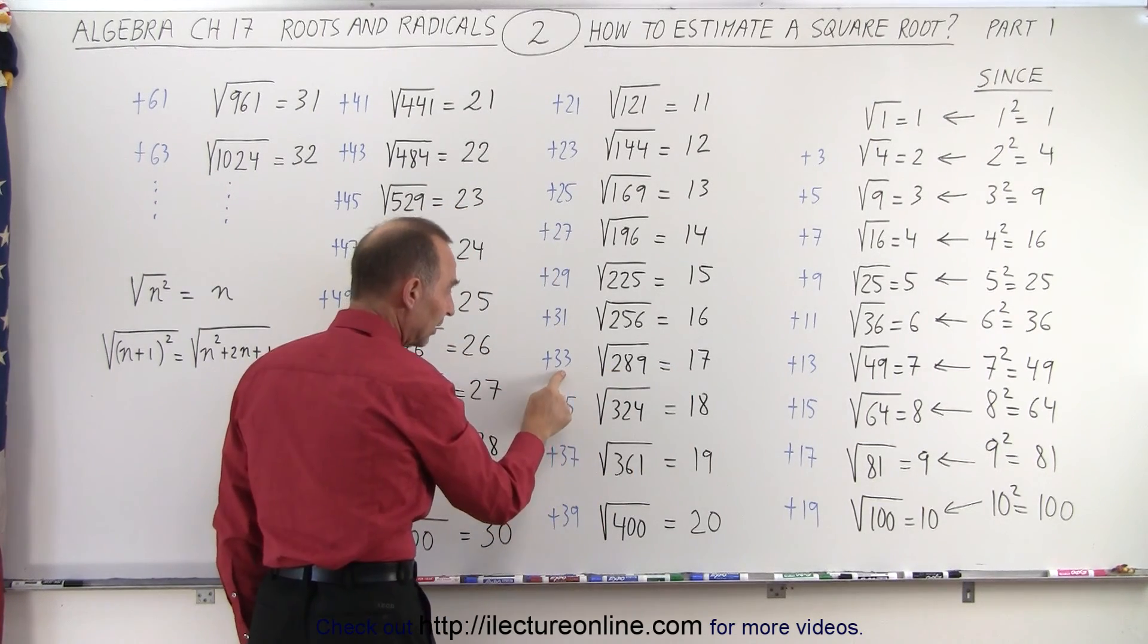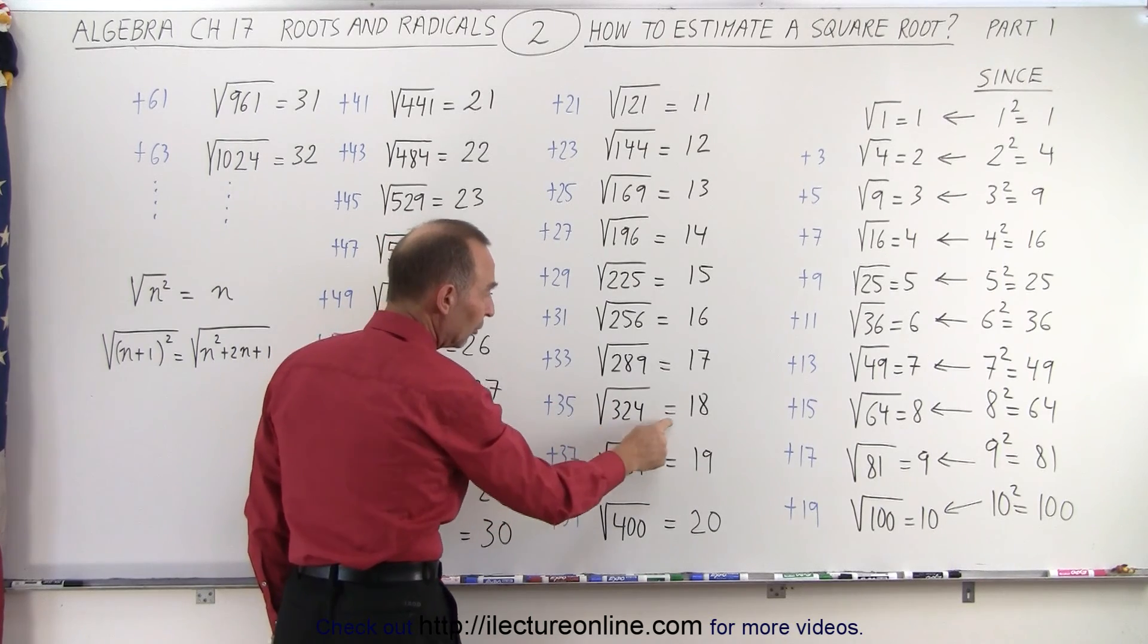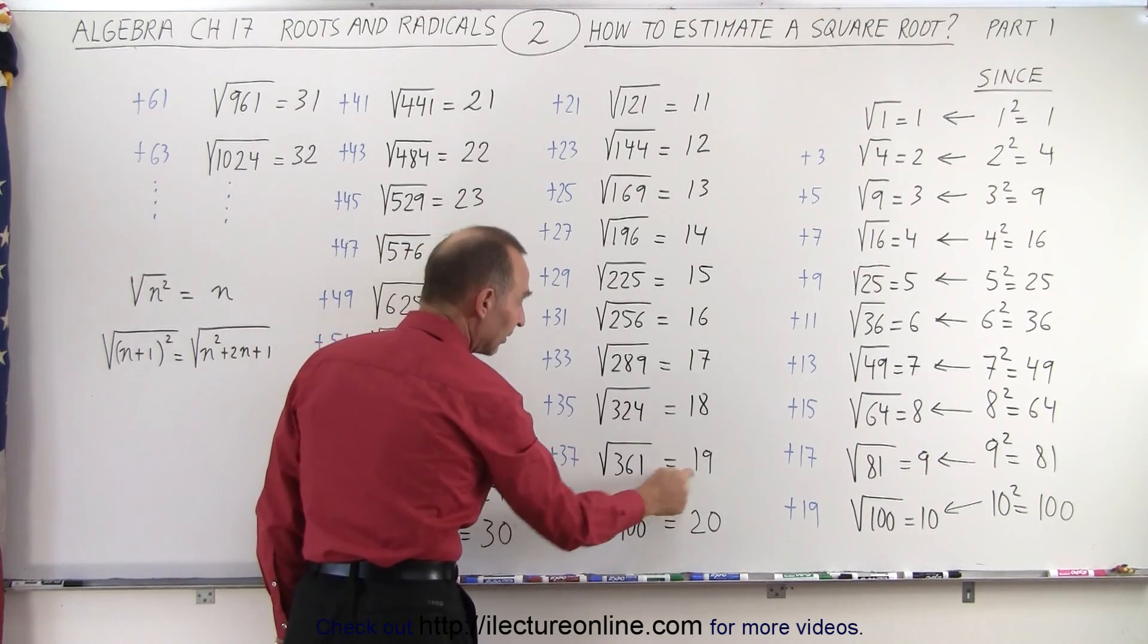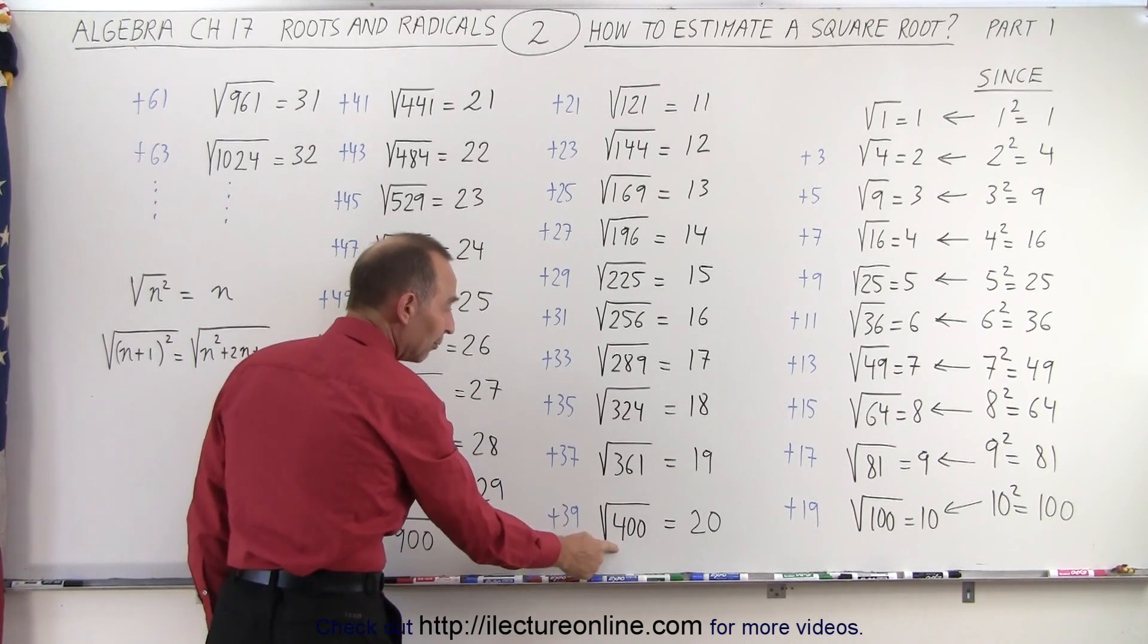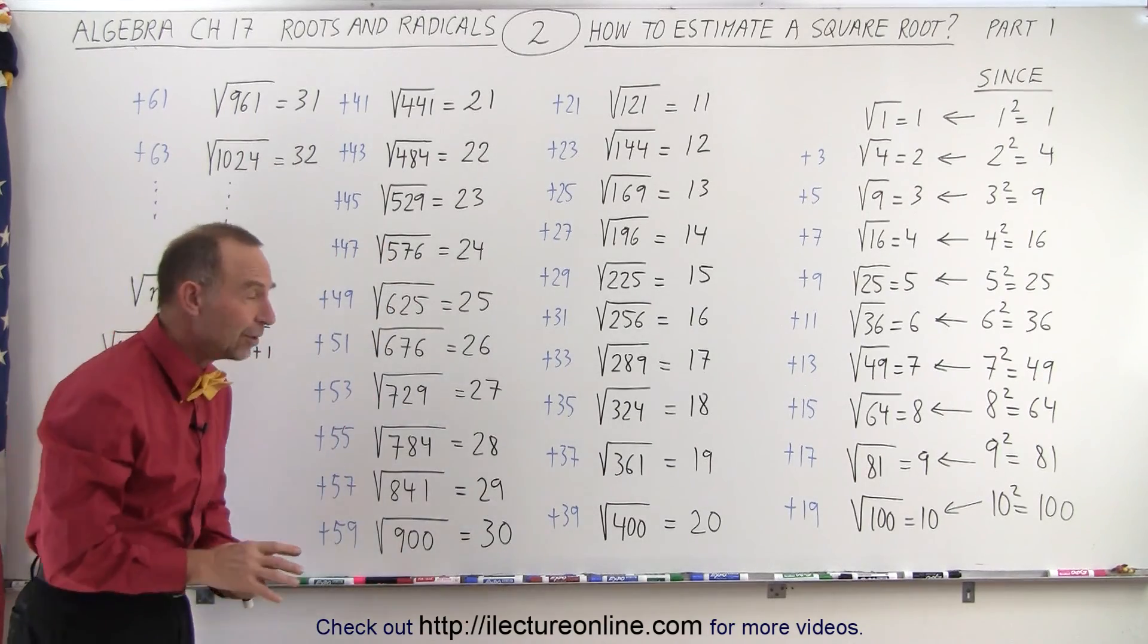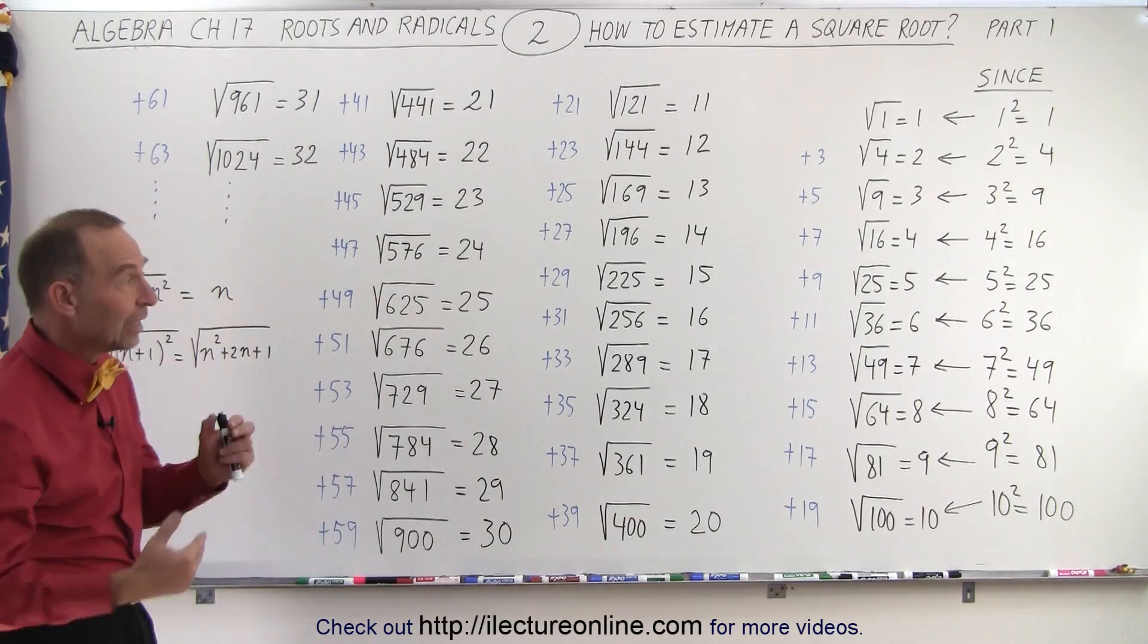If we add 33 to that, we get 324, and the square root of that is 18. Add 35 to that, we get 361, and the square root of that is 19. Add 39 to that, we get 400, and the square root is 20. And that's an interesting pattern that can come in very handy.